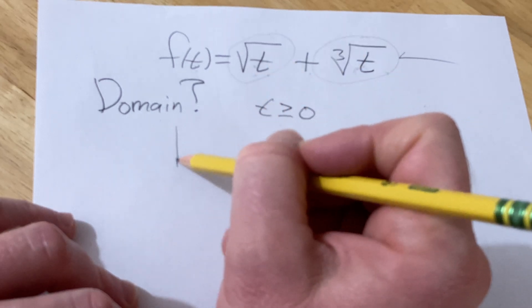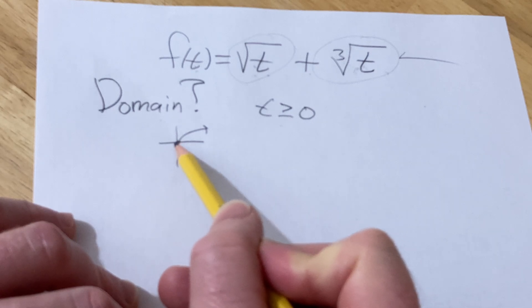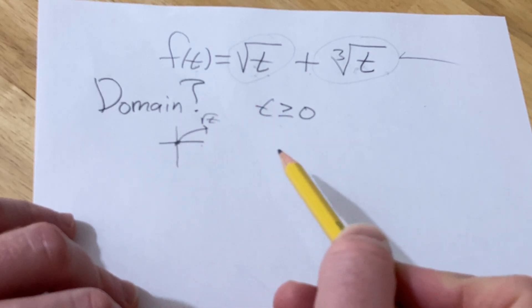Another way to see that is to think about the graph of the square root of t. It looks like this. So from the graph, you see it's zero or greater, right? This is the graph of just the square root of t.